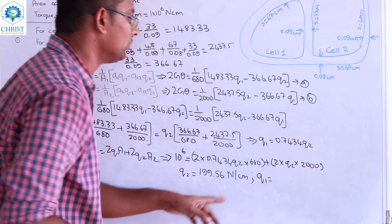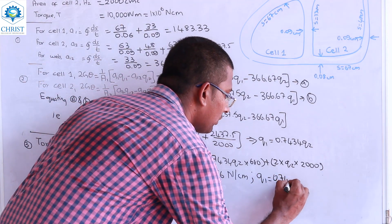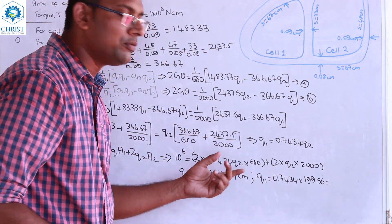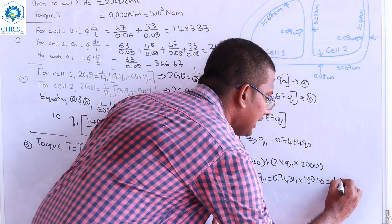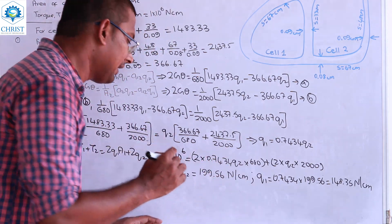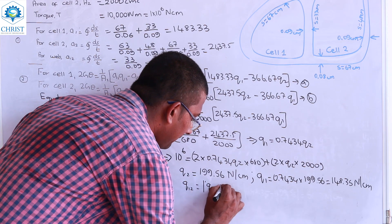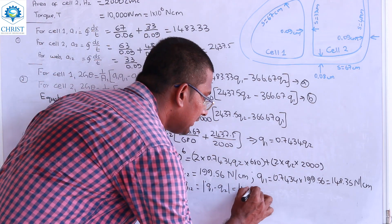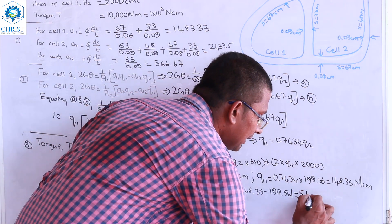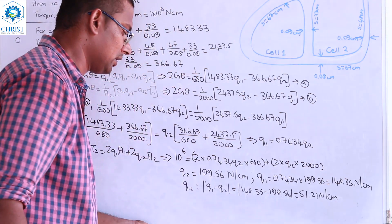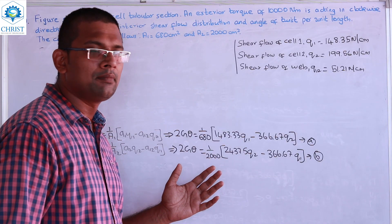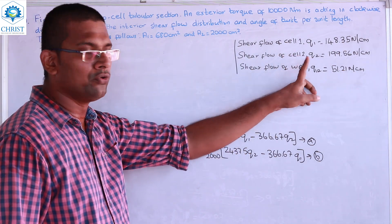Now Q1 equals 0.7434 into Q2, and Q2 equals 199.56, so Q1 equals 148.35 Newton per centimeter. The web shear flow Q12 equals Q2 minus Q1, which is 199.56 minus 148.35, giving Q12 equal to 51.21 Newton per centimeter. We have now obtained the shear flows for cell 1, cell 2, and the web.